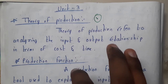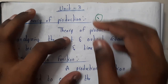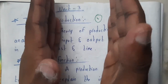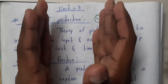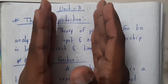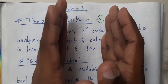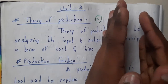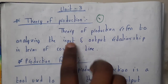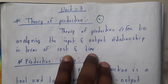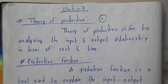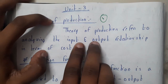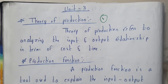So what is basically production? Production is nothing but you will be giving some inputs — those are your raw materials — and you'll be producing some products and getting money back. The middle portion is your production unit. You give inputs to the production unit, it analyzes them and forms the required output. Theory of production refers to analyzing the input-output relationship in terms of cost and time — these are the two most important parameters.